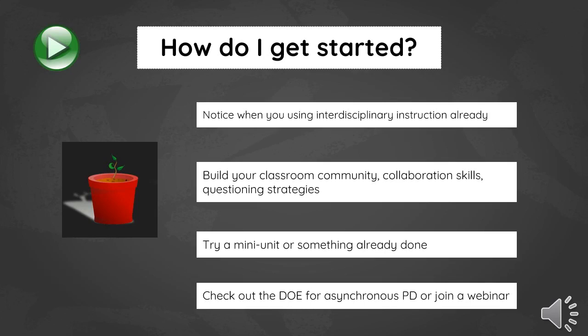So how do you get started? You might start small, especially if you've never done this before. I recommend just starting to notice when you're doing something that's interdisciplinary — maybe you're teaching reading and you pick a science book, or you're doing morning meeting and you add a graph. Just start noticing those, because those are seed ideas you could later grow into a bigger unit. Do things you're already doing anyway, like building your classroom community, teaching collaboration skills, and teaching questioning strategies — all skills students will need to be successful in these units. And maybe a bit later, try a mini unit: an afternoon, a day, or two days. Then check out the DOE site for asynchronous PD or join a webinar.